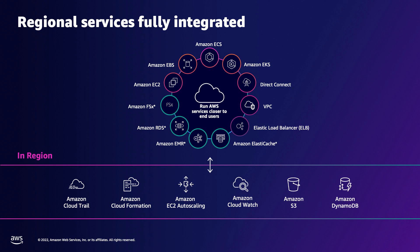Local Zones are extensions of parent regions, connected via a redundant AWS private backbone network. All AWS tools work in Local Zones just like how they work in regions — customers can log their APIs via CloudTrail, and use familiar tools like CloudFormation, IAM, and Auto Scaling to manage, secure, and scale their applications. They can also use services like DynamoDB and S3 back in the parent region via the backbone.